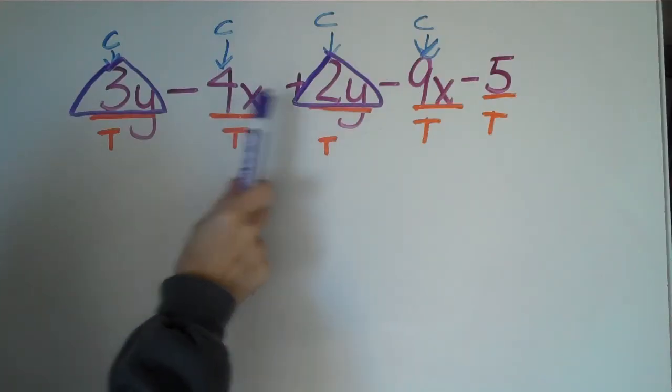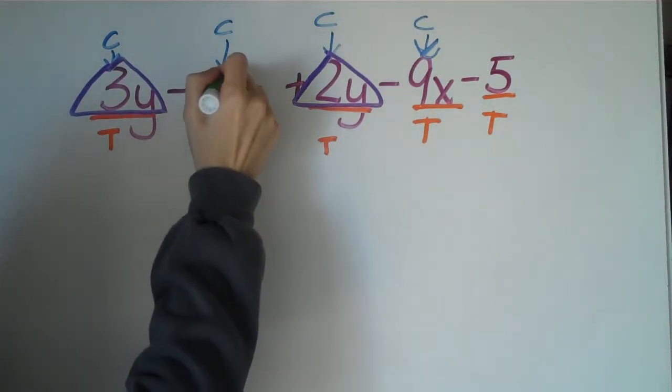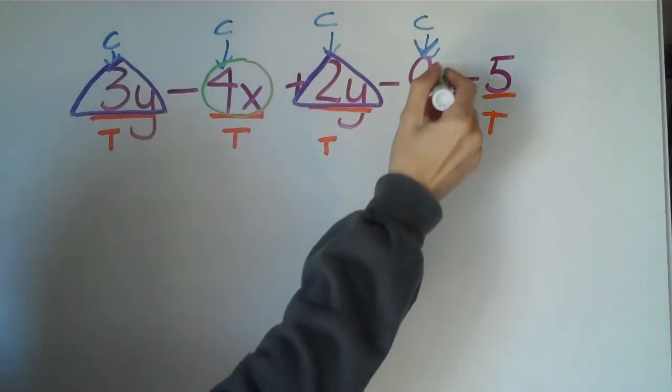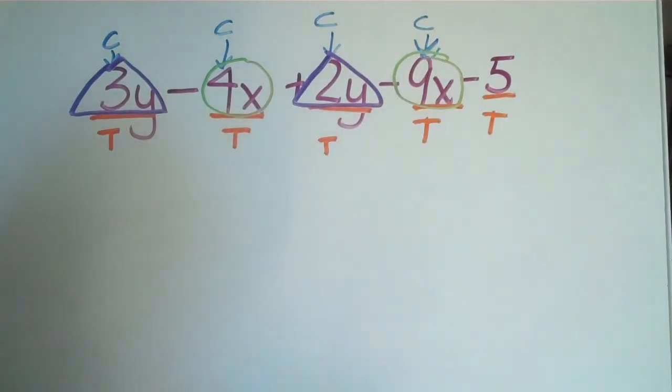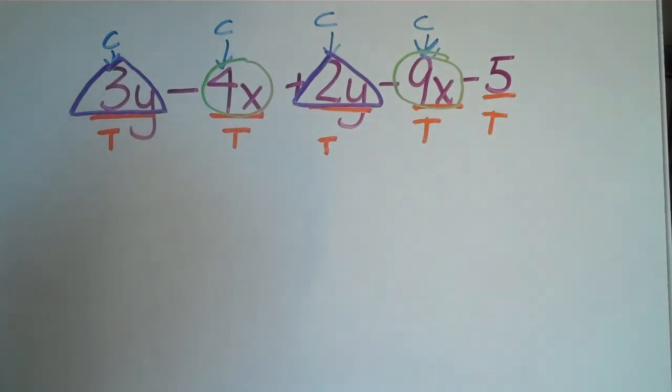And then we have 4x and 9x. So we're going to combine those with, or not combine them, we'll circle those. We'll combine in another video. So we have these two are matching, these two are matching, and this is a constant with no other like term that is matching.